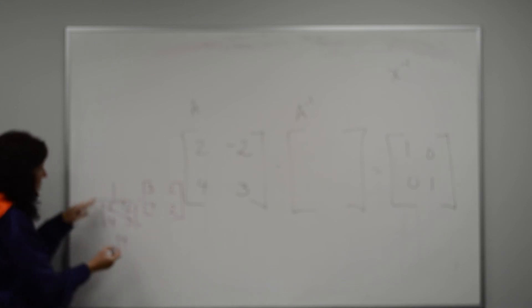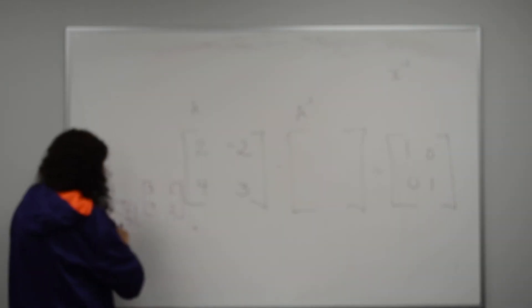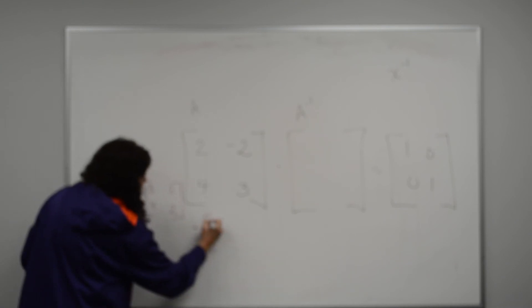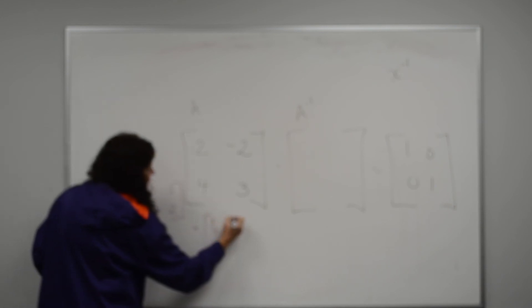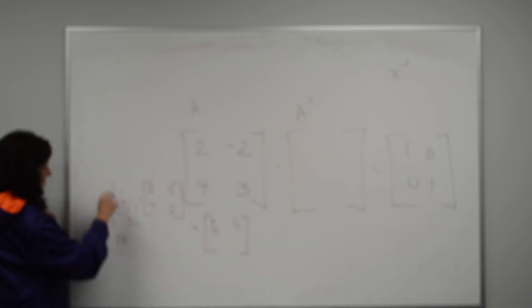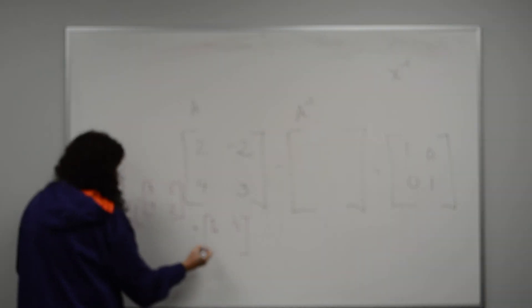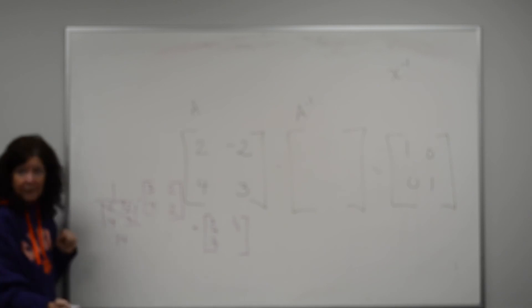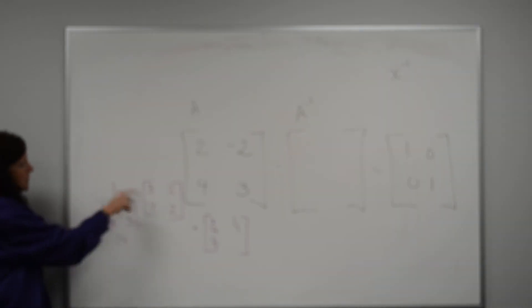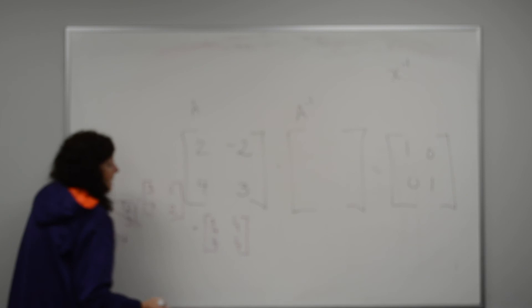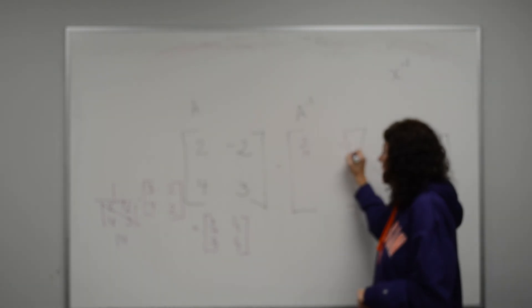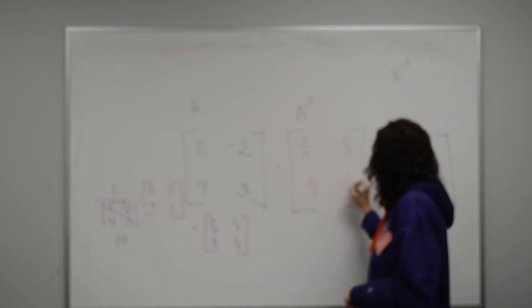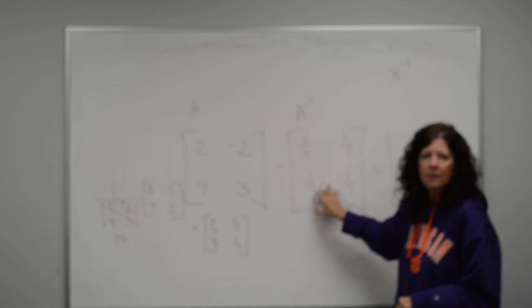Now I'm just going to multiply across here. When I multiply one-fourteenth times 3, I get three-fourteenths. When I multiply one-fourteenth times 2, I get one-seventh, because I have to reduce it down. One-fourteenth times negative 4, I get negative two over seven. One-fourteenth times 2 is one-seventh. If I took this matrix, three-fourteenths, one-seventh, negative two-sevenths, and one-seventh, and I multiply these two, that's what I would get.